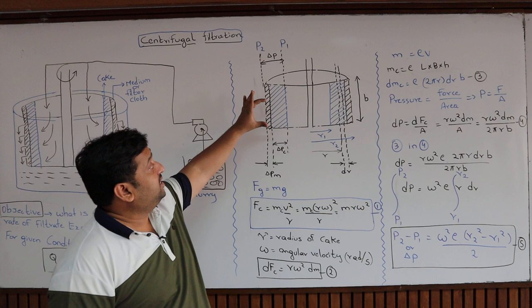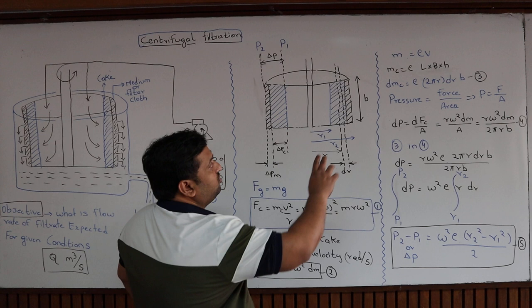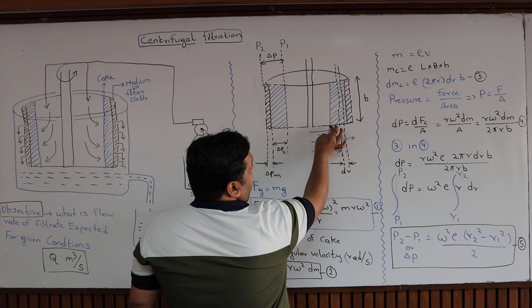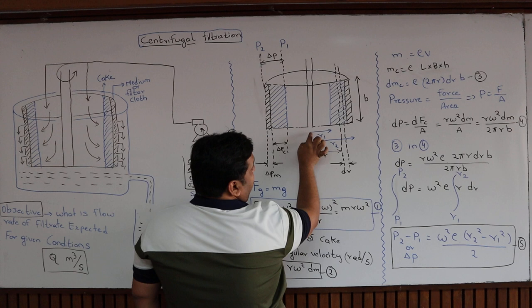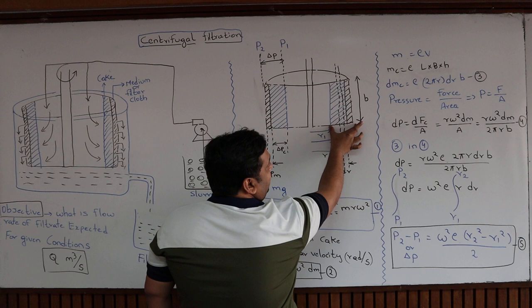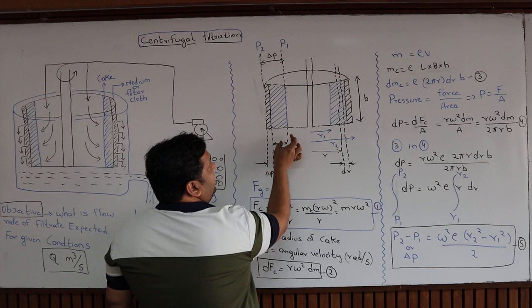Here is the micro-view of the centrifuge drum. The cylinder height is B. The blue region is the cake deposited, and the black is the filter medium. R1 is the radius from the center to the cake surface, and R2 is the radius from the center to the edge of the cylinder. R is any point between R1 and R2. The pressure drop across the cake is delta Pc, across the medium is delta Pm, and the total is delta P = P1 − P2.